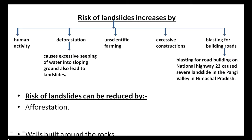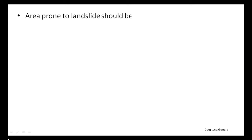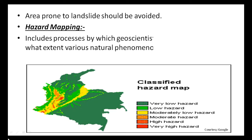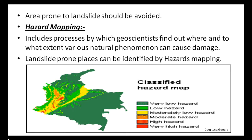The risk of landslides can be reduced by afforestation, building walls around rocks, building drainage systems, and avoiding areas prone to landslides. Hazard mapping is also important — it includes processes by which geoscientists find out where and to what extent various natural phenomena can cause damage. Landslide-prone places can be identified by hazard mapping.